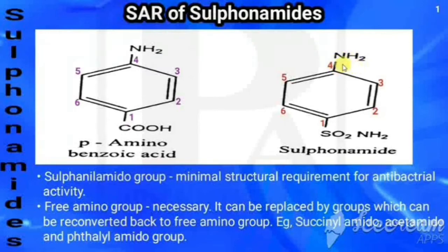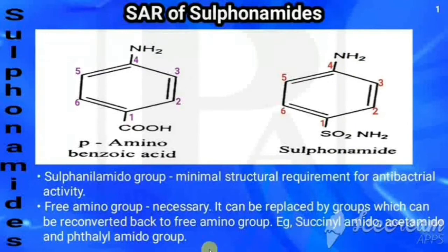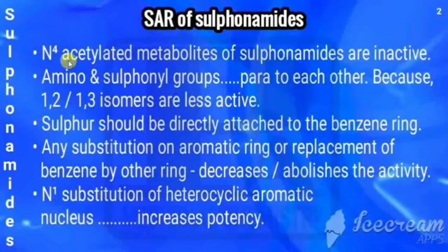The free amino group at N4 should remain free. If it is replaced by any other group, it should be reconverted back to a free amino group for activity. For example, succinyl amido, acetamido, or tallyl amido groups — N4-acetylated metabolites of sulfonamides are inactive.